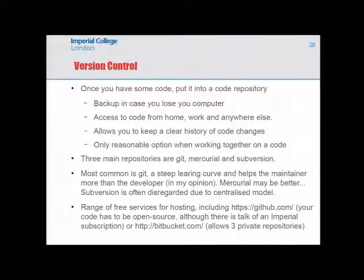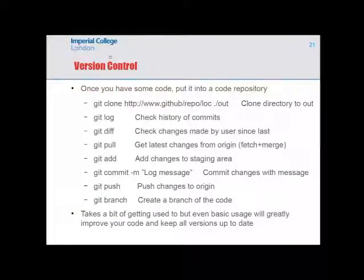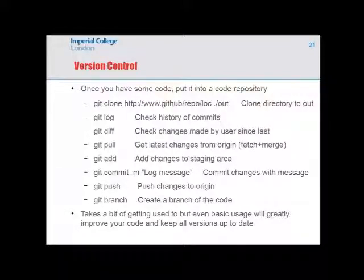Bitbucket allows three private repositories for free, whereas GitHub requires code to be public by default, which is a problem for sensitive code. Key Git commands include: cloning a repository to your local directory, viewing a log of changes, checking your own changes with diff, pulling the latest version, adding and committing changes with a log message, pushing changes back to the shared repository, and creating branches for new features. It takes getting used to, but will greatly improve your code.